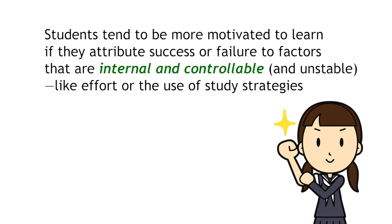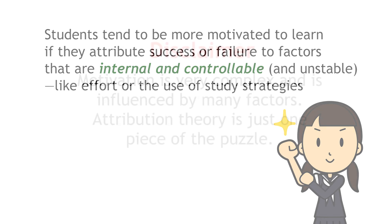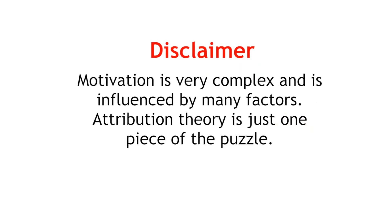The main point of attribution theory in education is that students tend to be more motivated to learn if they attribute success or failure to factors that are internal and controllable, like effort or the use of study strategies. If students believe their success or failure are mainly determined by internal and controllable factors, they will be more likely to think that their efforts are worthwhile. In contrast, if students believe success and failure are mainly down to luck, teacher preferences, or natural talent, why would they invest a lot of time and effort in learning? Let me add a disclaimer: motivation is very complex and is influenced by many factors. Attribution theory is just one piece of the puzzle.